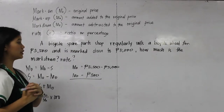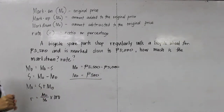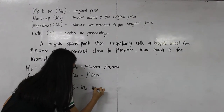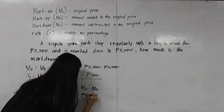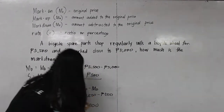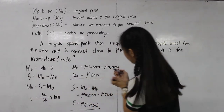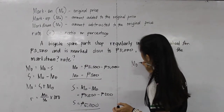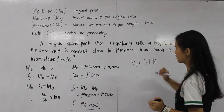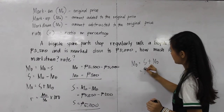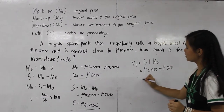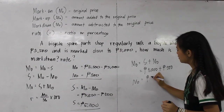So our markdown is 500 pesos. What if in this example the selling price is not given — only the original price and the markdown are given? The formula for selling price is original price minus markdown: 5,500 minus 500, giving us 5,000 pesos. And if the original price is not given, original price equals selling price plus markdown: 5,000 plus 500 equals 5,500 pesos.